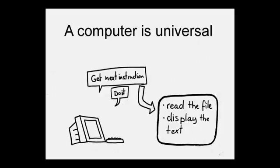What is a computer? A computer is a universal machine. It will do any computation you want it to because you give it a program that says what the computation is that you want.